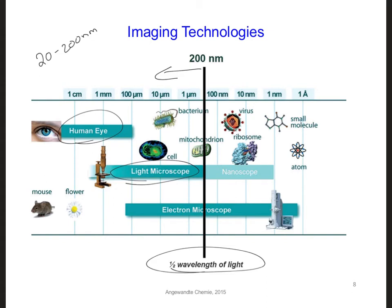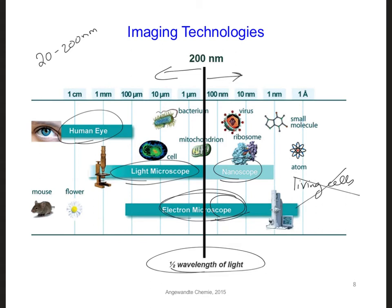The imaging technologies that can examine features smaller than 200 nanometers, like an electron microscope or the so-called nanoscope, unfortunately cannot be used to study the behavior of living cells, because the cells either experience too much radiation or they must first be stained or mixed with other substances that can kill them or alter their behavior.